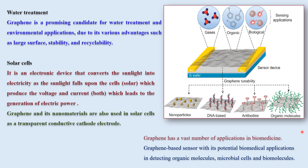Graphene also has applications in water treatment and environmental applications because of its various advantages such as large surface area, stability and recyclability. It is also used in solar cells, where graphene and its nanomaterials are used as a transparent conductive cathode electrode. Graphene also finds a vast number of applications in biomedicine, with potential in detecting organic molecules, microbial cells and biomolecules.